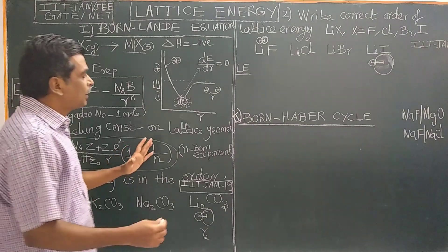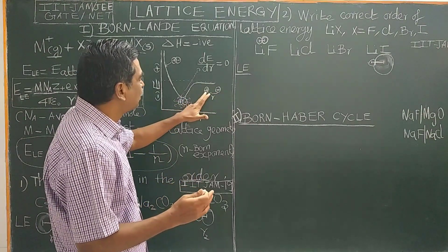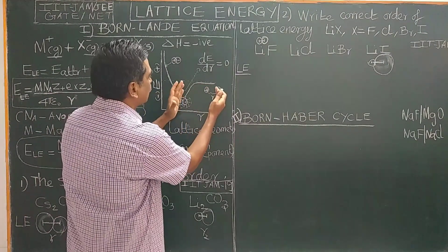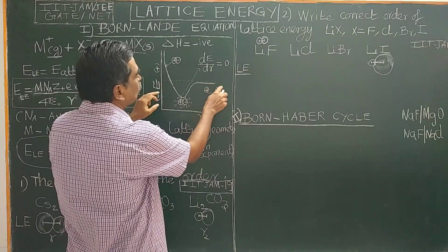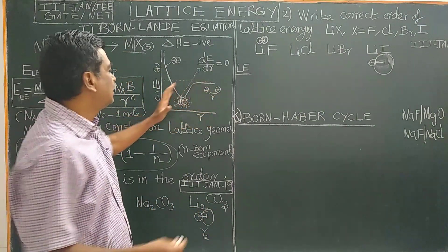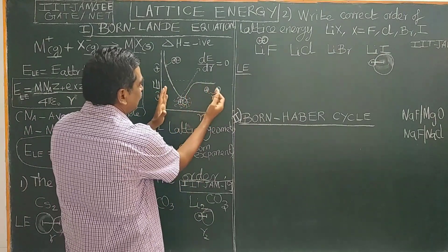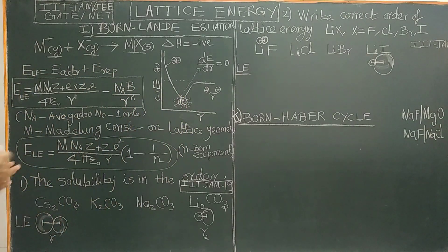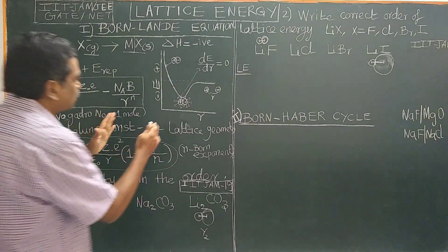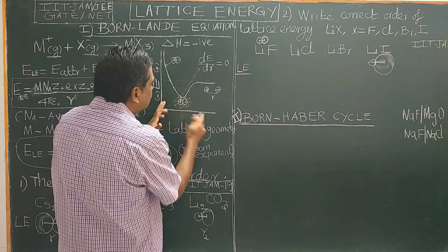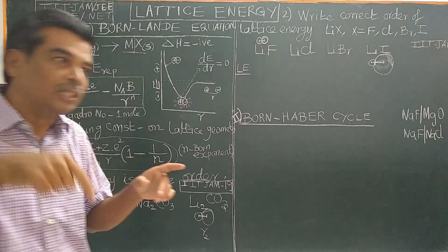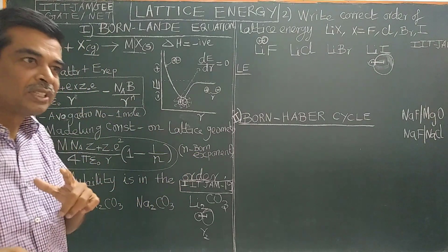How does the ion interact? For example, a plus ion and a minus ion — they are far apart. When you bring them together, the potential energy of the system equals the potential energy of the individual ions. As you bring them closer, the distance decreases and there will be an attractive force because of the electrostatic force of interaction. At equilibrium, this is the equilibrium distance. The distance between the two ions can be calculated from the unit cell length A. The relation between A and R has been discussed in solid state chemistry.